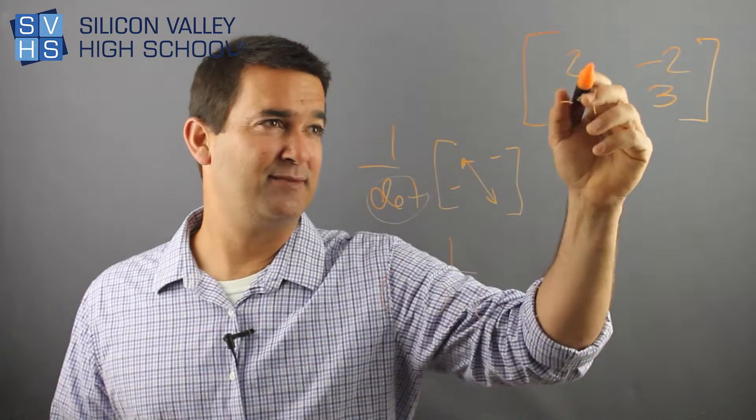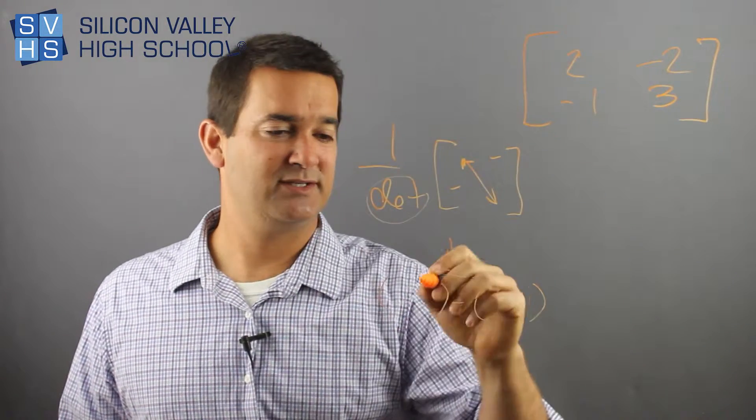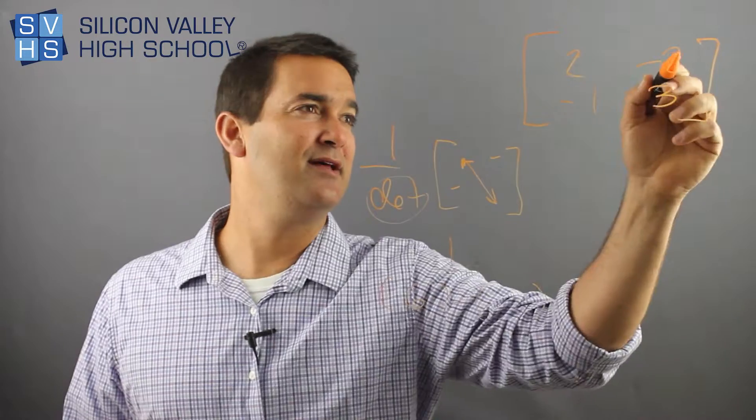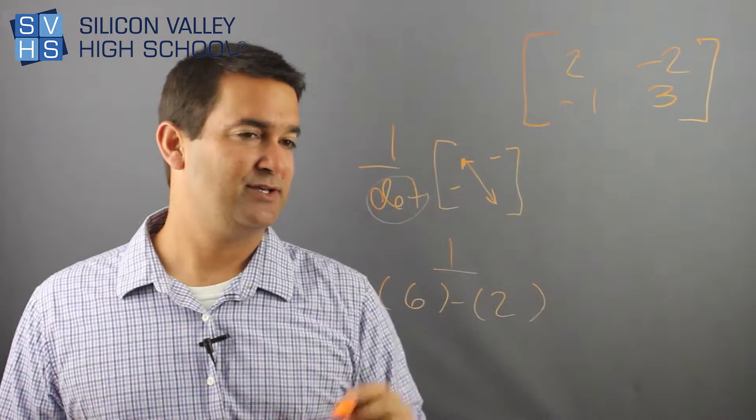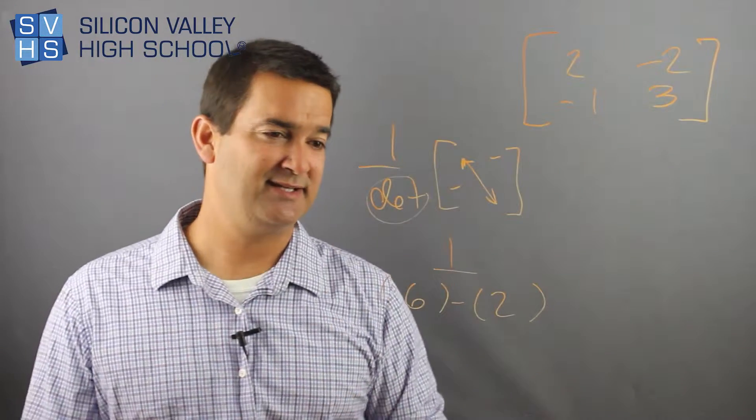So let's do it. All right, determinant of this. This times this, 6 minus this times this. Negative one times negative two is a positive two. So this little aspect of this is done.